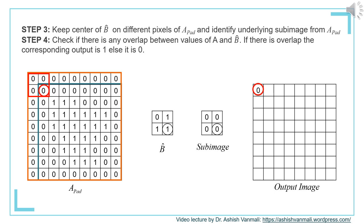Here is an example where the center of B-cap is placed on the first pixel of A. The location is shown with a red boundary and the center with a red circle. The corresponding underlying sub-image is shown along with B-cap. There are three ones in B-cap, so we check those corresponding locations in the sub-image. In this case, all sub-image values are zero, so there is no overlap between B-cap and the image; hence the output will be zero.